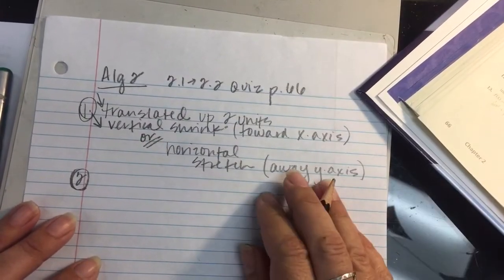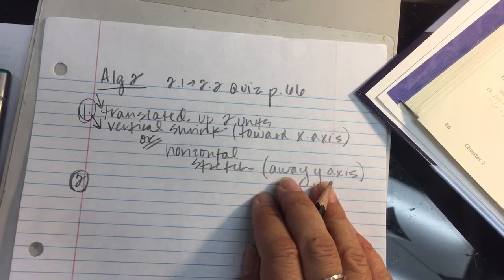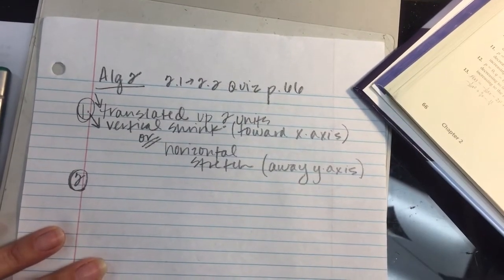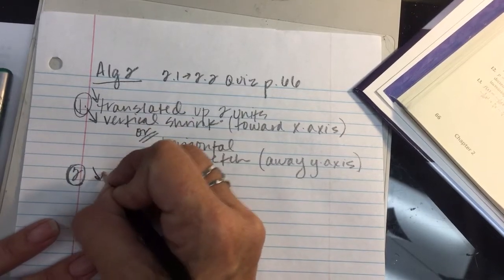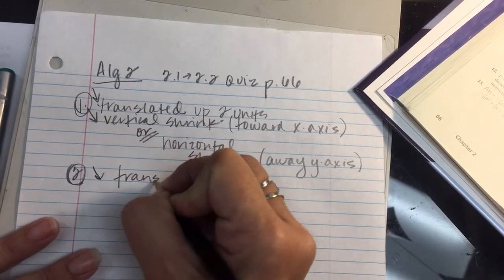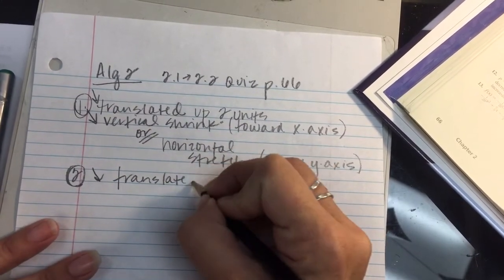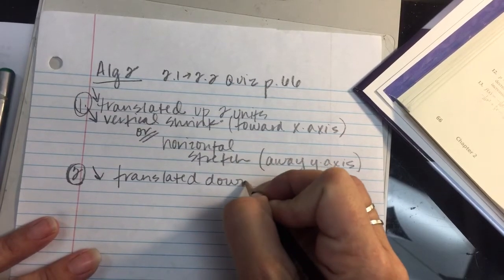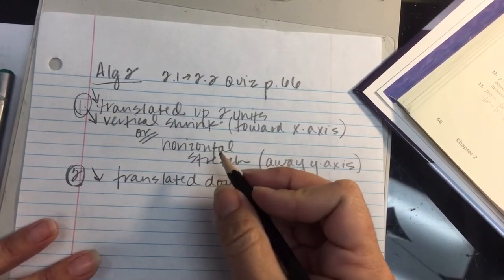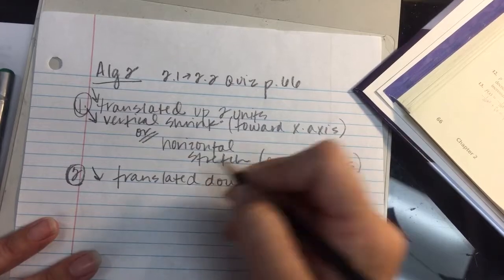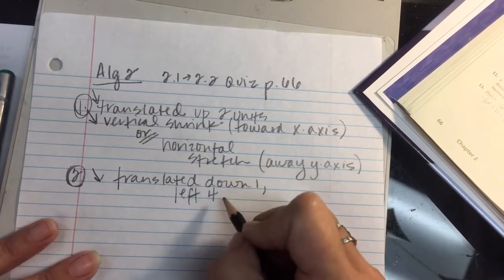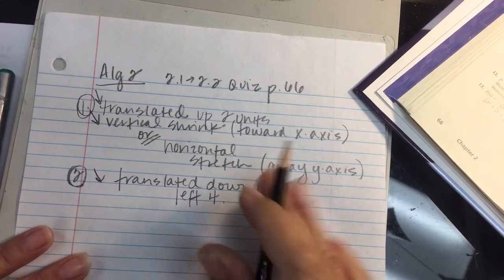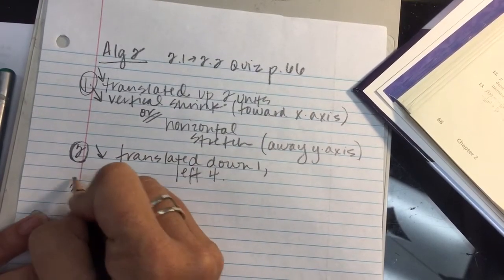Problem number two. In problem two, I noticed that the shape of the parabola has stayed exactly the same, so it's just a series of translations. It looks to me as this was translated down one unit, and then to the left, four units. Doesn't matter which way you write those. Both of them are translations. You're going to wind up in the same spot no matter what.